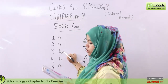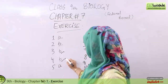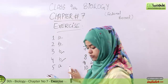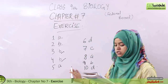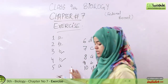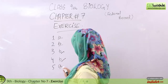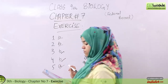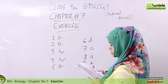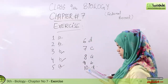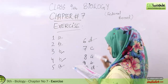Fourth MCQ: from which bonds of the ATP molecule is energy released? The answer is the high-energy phosphate bonds. Fifth MCQ: in which component of the cell is chlorophyll present? The answer is the stroma.